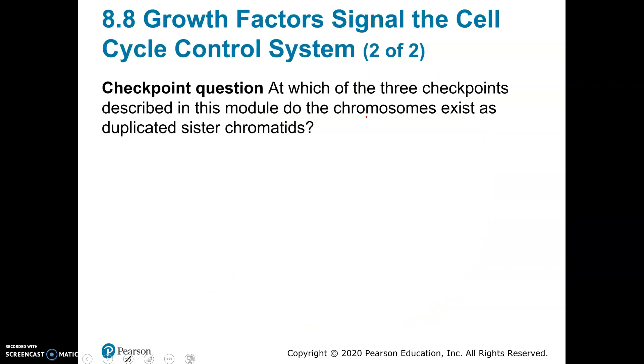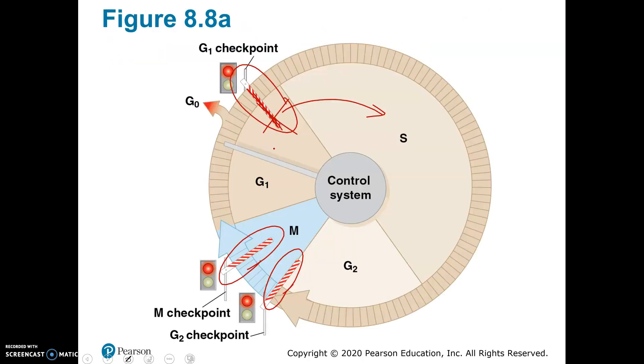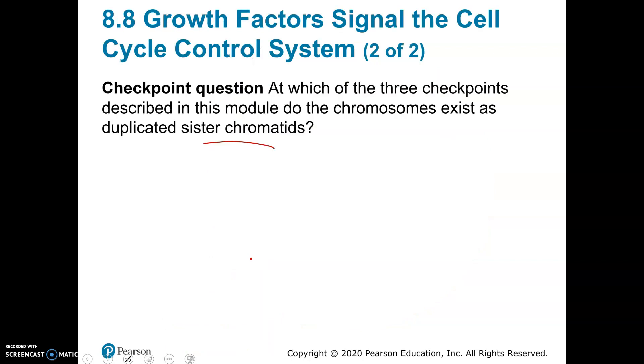At which of those checkpoints would the chromosomes be sister chromatids? Well, if we go back, remember in G1, the chromosomes are just sticks, so definitely not here. During S, the chromosomes would now form those Xs, and they would stay that way in G2. So at this checkpoint, the G2 checkpoint, the chromosomes would consist of two chromatids. They would be duplicated chromosomes. By the time you get to the end of mitosis, they've split again, so they would not be duplicated there.